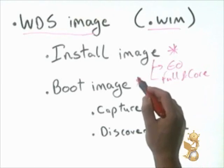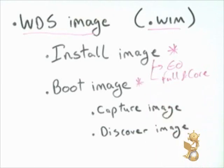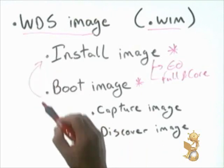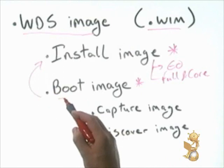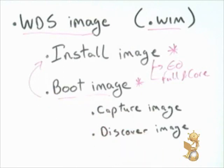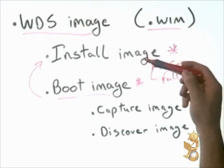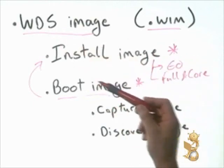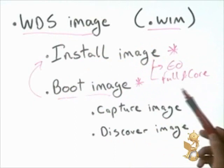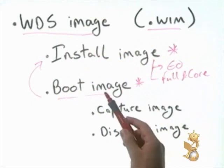Another type of WDS image is the boot image. The boot image is available in the same location as the install image. Using a boot image, your computer will boot off a menu that displays all the available operating systems that can be installed within the WDS server. We can have an unlimited number of install images — the boot image will load and show all available install images, letting you choose and start the installation of a specific version.